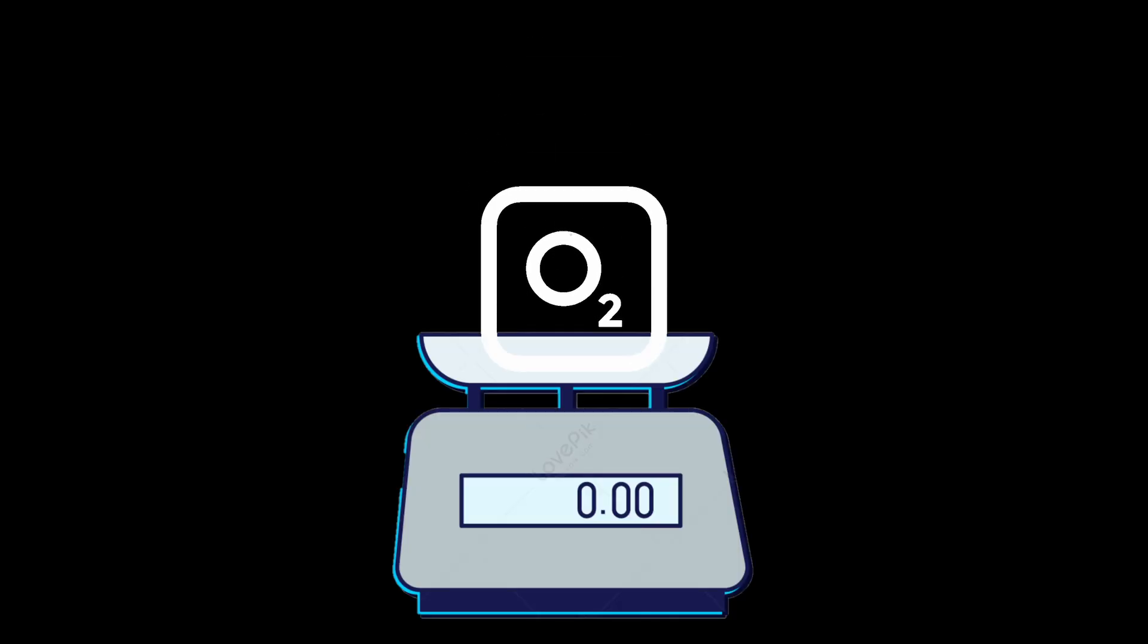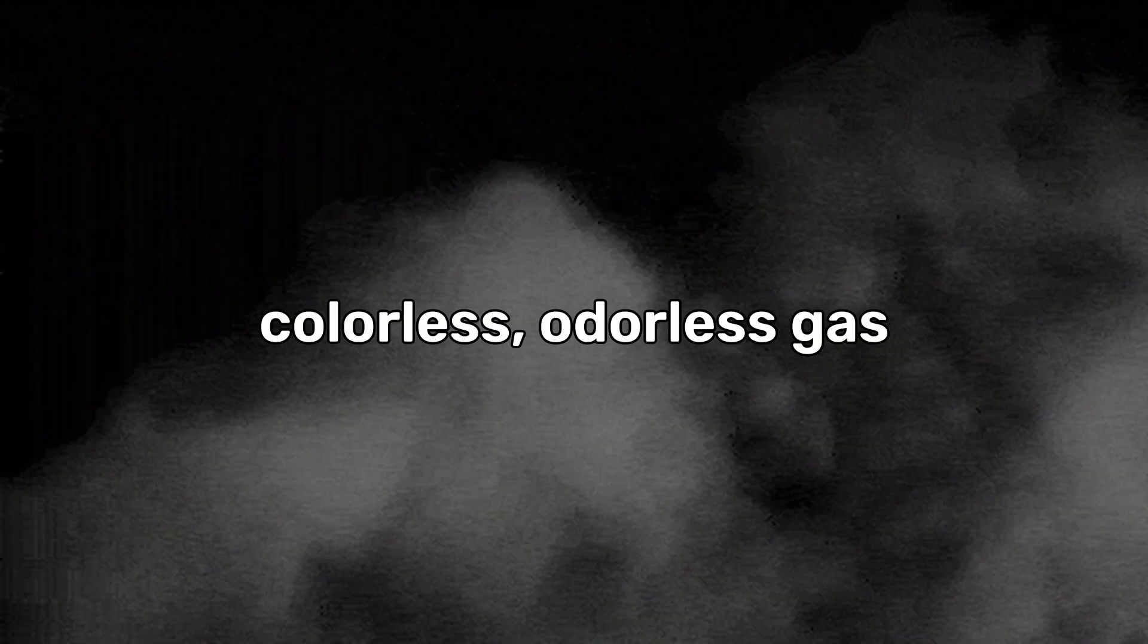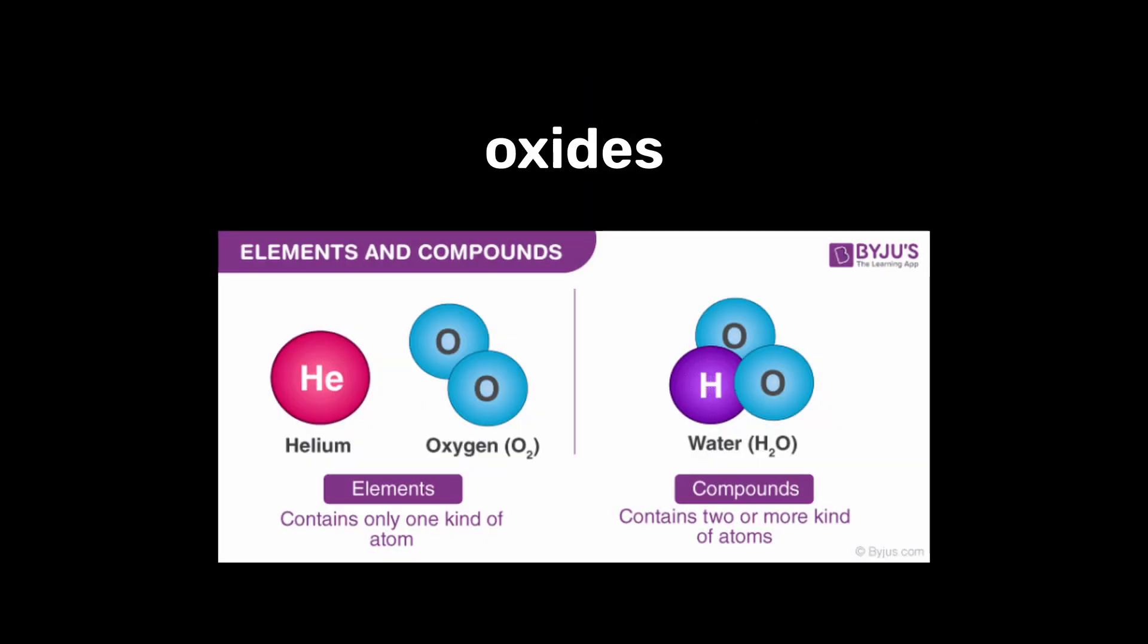Oxygen has an atomic mass of 16 and is typically found as a colorless, odorless gas. It's highly reactive and easily forms compounds called oxides with most elements.